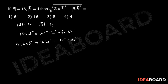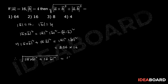Here modulus of a bar is 16, so 16 squared is 256, into modulus of b bar which is 4, whole square that is 16. Therefore, square root of modulus of a bar cross b bar whole square plus modulus of a bar dot b bar whole square equals 16 into 4, that equals 64.